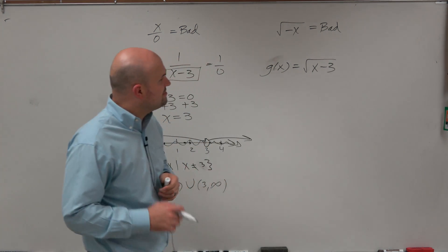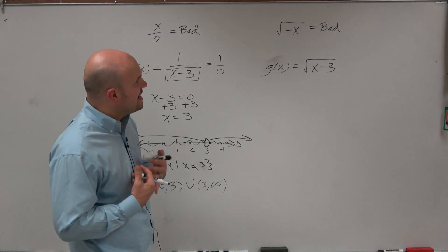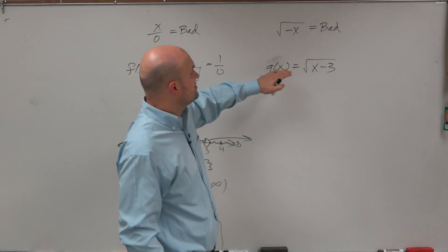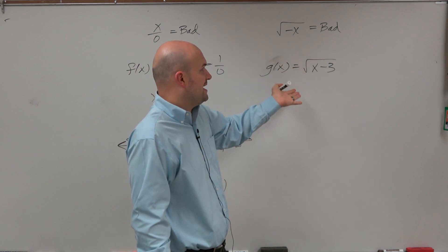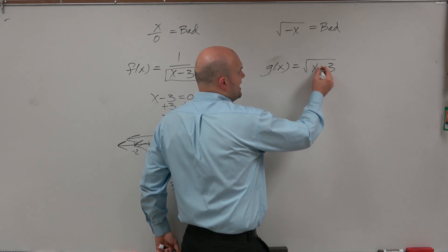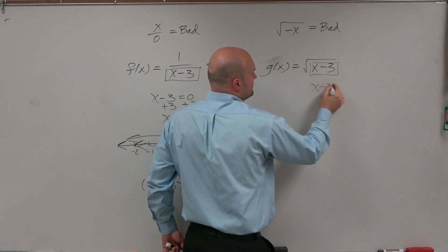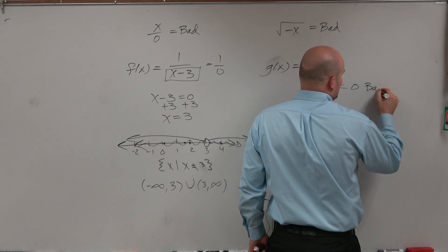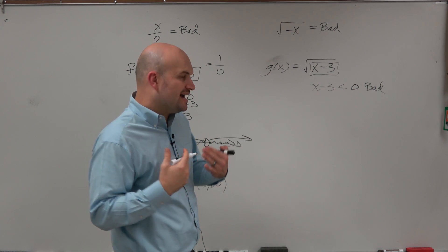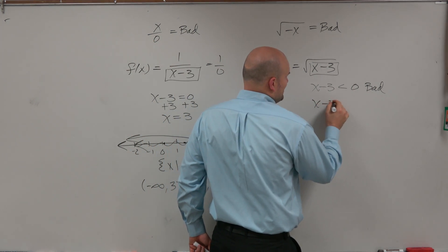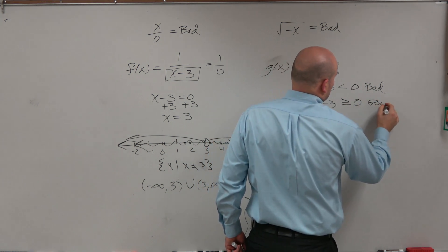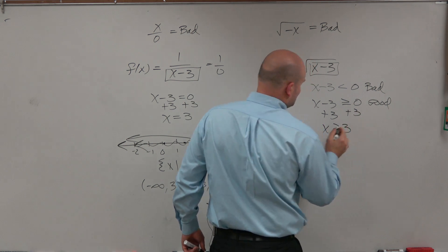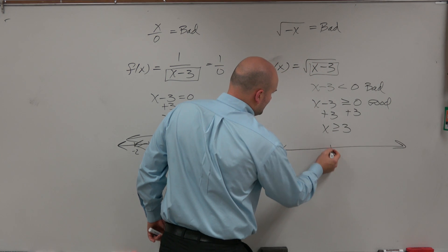The next function is g of x equals the square root of x minus 3. In this case, rather than finding the bad numbers, I'm going to find the good numbers — all the values that make the radical non-negative. When x minus 3 is less than 0, that's bad. So the good condition is x minus 3 has to be greater than or equal to 0. Solving: add 3 to both sides, x has to be greater than or equal to 3.